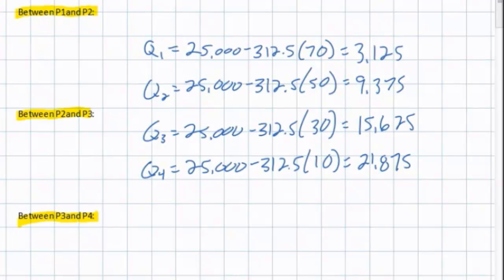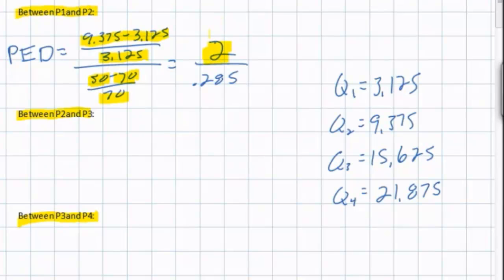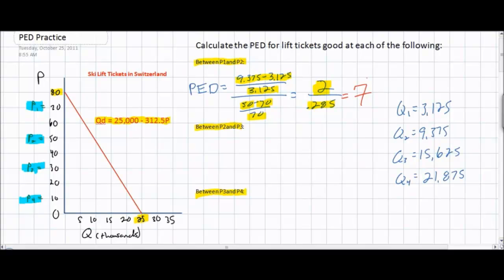Let's plug these numbers into the PED equation now. When we use Q2 and Q1 to find the price elasticity of demand between P1 and P2, we get the following results. First, Q2 is 9,375 minus Q1 of 3,125. To find the percent change in quantity, we divide by the original quantity of 3,125. Our new price is 50 francs and the old price was 70 francs, so we do 50 minus 70 divided by 70. This gives us a 200% increase in quantity demanded resulting from a 28.5% decrease in price, giving us a PED coefficient of 2 divided by 0.285, which is 7. The price elasticity of demand between 70 and 50 francs is 7.